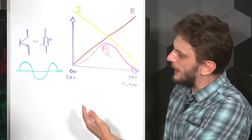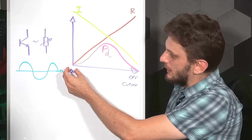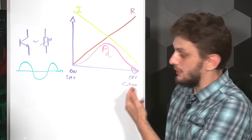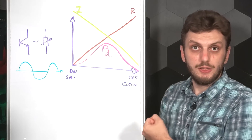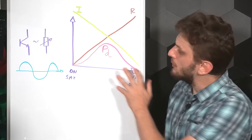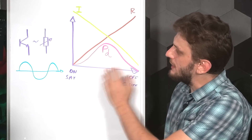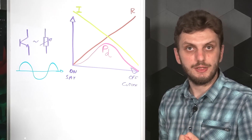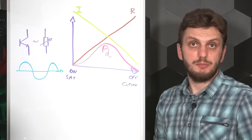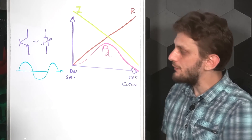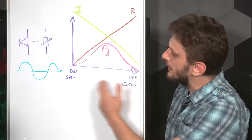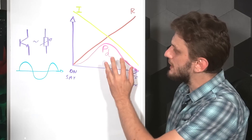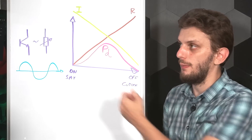We will have minimum dissipation when the transistor is fully on or saturated, as well as when it is fully off or in cutoff mode. But right here in the linear region, we have the maximum amount of power getting dissipated over the transistor. And if we're amplifying something like a sine wave, we will be continuously going left and right over this graph, always going through this high power dissipation area.